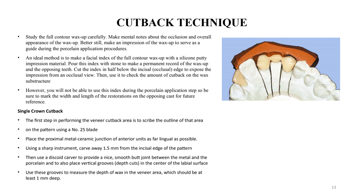For a single crown cutback, wax up to full contour and then cut back using either a carving instrument or a number 25 blade on a scalpel. Make sure the proximal contacts — mesial and distal — are free of wax so they can be used for the buildup. Usually we cut back about 1.5 mm of wax, which allows for building up enough porcelain to create depth and aesthetics matching the natural tooth.